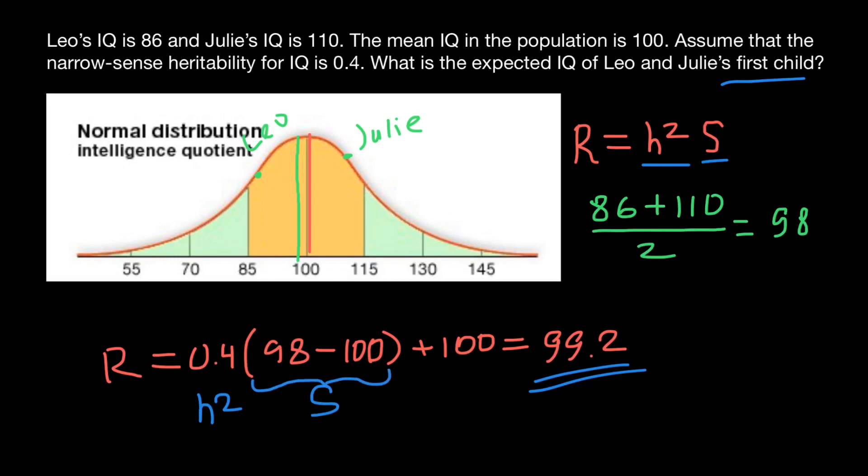And S here stands for the selection differential. This part, we're going to get a negative number. Our answer has to be a number which stands for the IQ of the child. So we have to add the mean IQ of the base population. That's why we add 100 here.